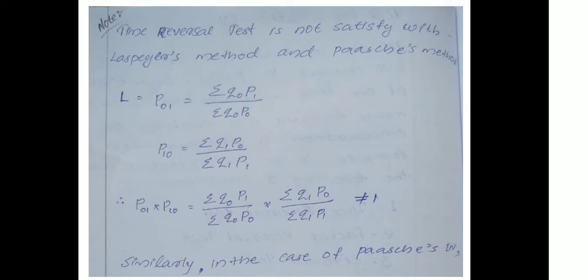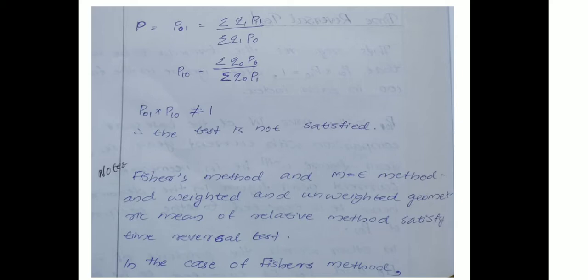P01 into P10 equals (summation Q0·P1 / summation Q0·P0) into (summation Q1·P0 / summation Q1·P1), which is not equal to 1. In the case of Paasche's test index number, P01 equals summation Q1·P1 / summation Q1·P0, and P10 equals summation Q0·P0 / summation Q0·P1. Therefore the test is not satisfied. Both Paasche's and Laspeyre's tests satisfy time reversal test.